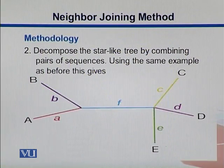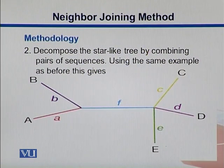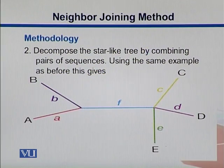Next, we decompose this star-like tree by combining pairs of sequences. We can have B and A on one side together. On the other side, we might have C and D combined or D and E combined. In this way, we can come up with clusters or groups on both sides.